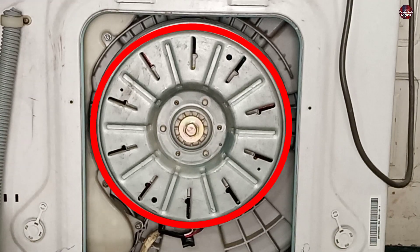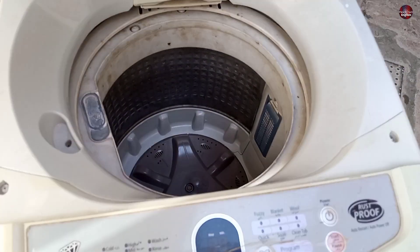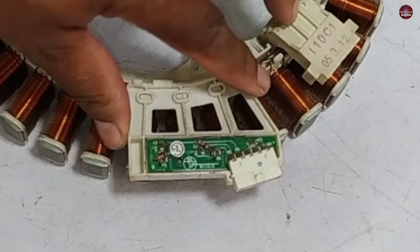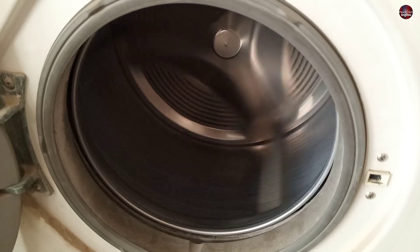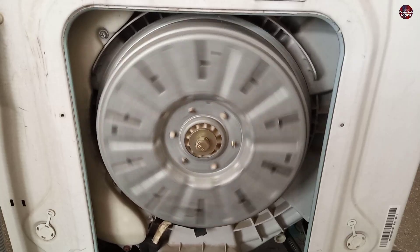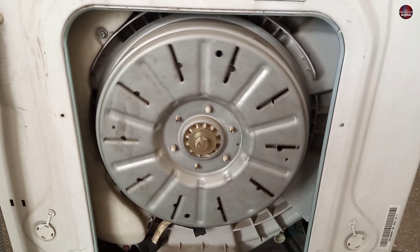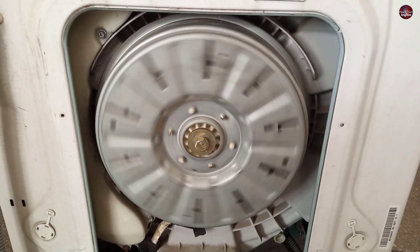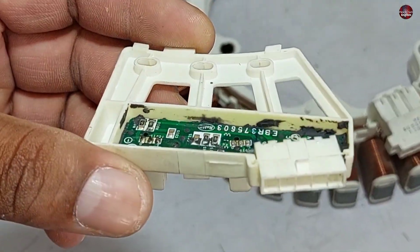This inverter direct drive motor is installed in front and top load washers. And this hall sensor is installed above the stator, which detects the drum speed. It also tells at what speed the rotor is rotating and where the rotor's or drum's position is when rotating. This is why this hall sensor is very useful.